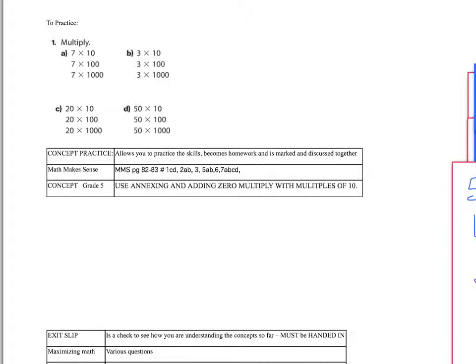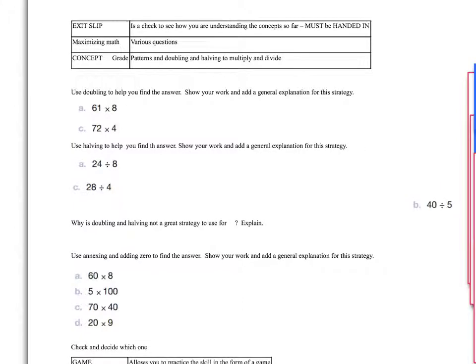When you've finished your concept practice, you will be moving on to the exit slip. All right. Exit slip. In case you've lost your paper copy, here is a copy of the exit slip. It is working on multiplying with patterns, multiplying and dividing with doubling and halving, as well as annexing zero. So make sure you show your work. And notice it also says to add an explanation. Show your work. Add an explanation. Why is doubling and halving not a great strategy for division? Explain. Use annexing and adding zero to find these answers. Show your work. Add an explanation. Remember, explanations need words. So make sure that you are explaining using words. Remember, your exit slip must be handed in, and your name must be on it, as well as what the concept is. We are using patterns, we are doubling and halving, and we are annexing zero.